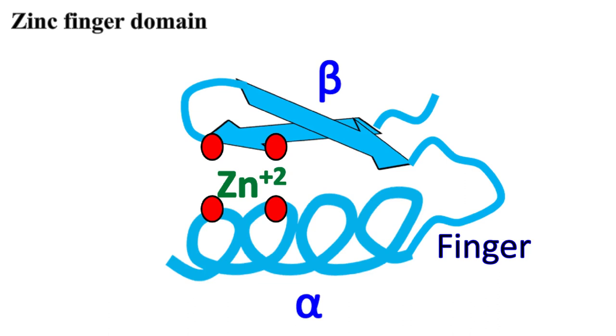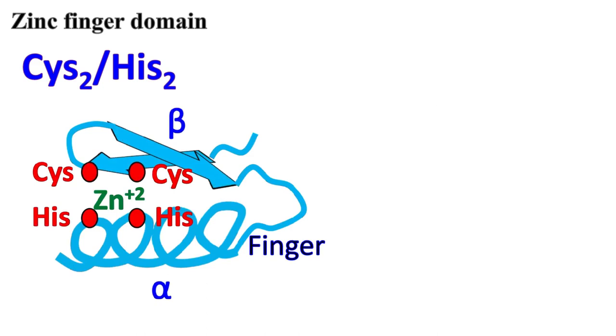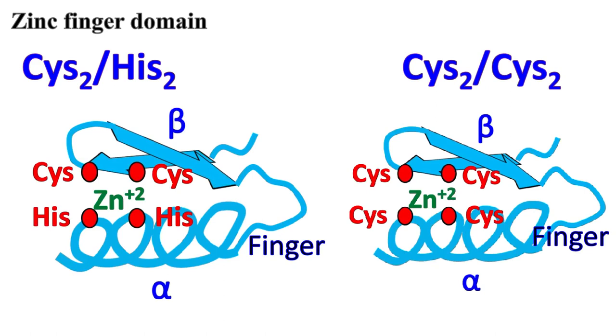The amino acids that bind zinc ions include two cysteine and two histidine, commonly designated as cysteine 2-histidine 2, or it can be four cysteine molecules, two on beta sheet and two on alpha helix, commonly designated as cysteine 2-cysteine 2.